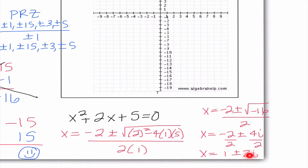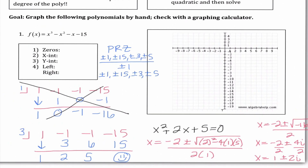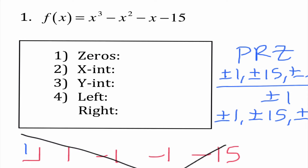Now I have imaginary answers — those are not x-intercepts, but they are zeros. My zeros are x equals 3 and x equals negative 1 plus or minus 2i. It makes sense I have three answers because our degree is 3. Our x-intercepts: we only have one of them — it is 3, 0 — because 3 is the only real number. We don't care about graphing imaginary answers.